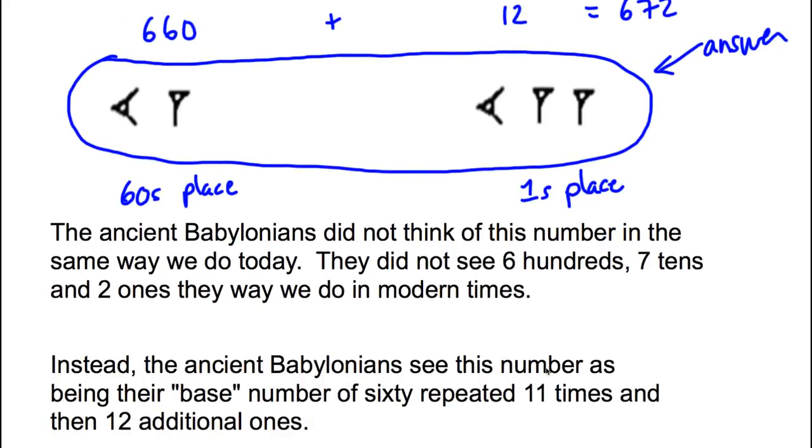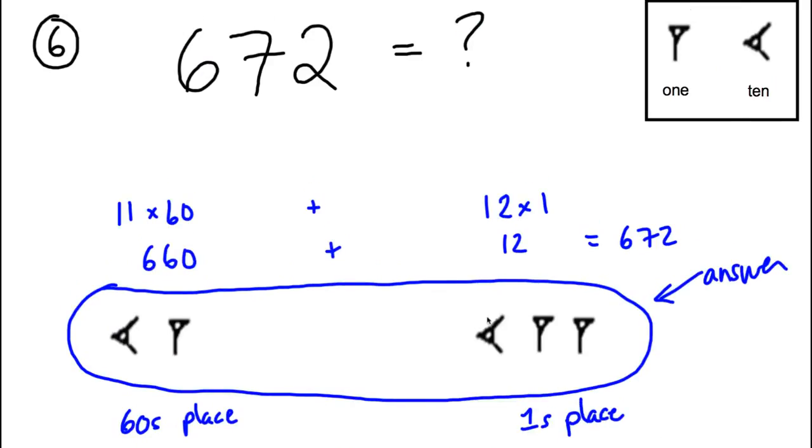It's really neat to think about how the ancient Babylonians did not think of this number in anything like the way that we do today. 672, they don't think 600s, 7 10s, and 2 ones, which is our modern Hindu-Arabic numbers, which are base 10. They had a base 60 number system, and it was positional. This position is 1s, this position is 60s, but it's a very different positional system.